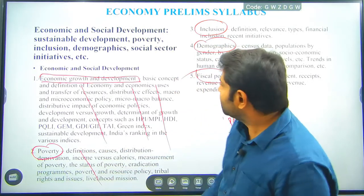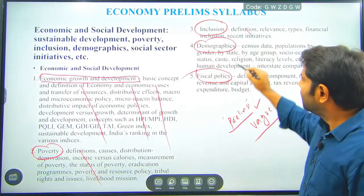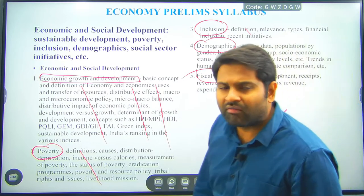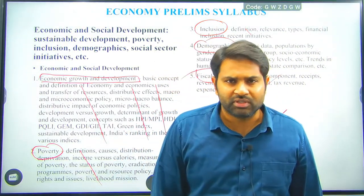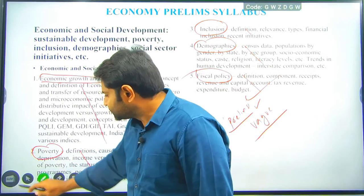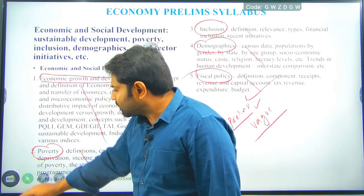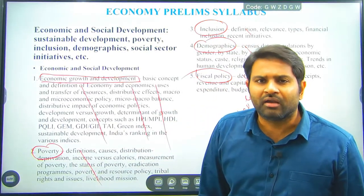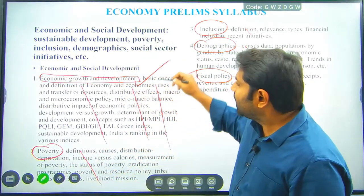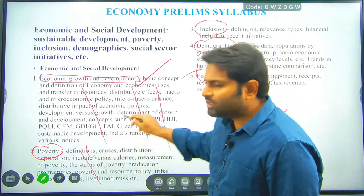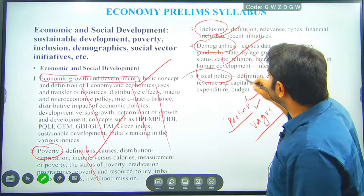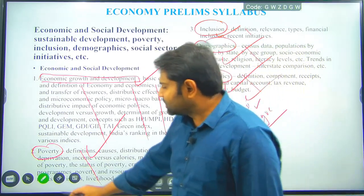Poverty is given, inclusion is given, demographics is given, fiscal policy is given. We have covered fiscal policy widely in the budget series just before this. This is the syllabus given for the preliminary examination. We are going to look at the 2022 paper and understand where the questions are falling — economic growth and development, poverty, inclusion especially financial inclusion, demographics, and fiscal policy.